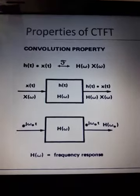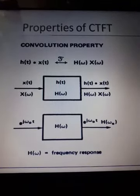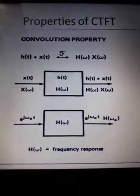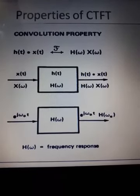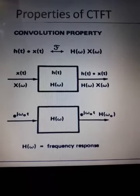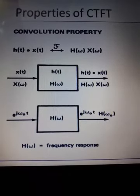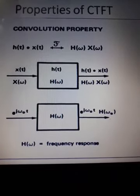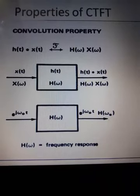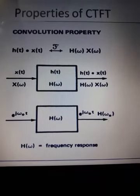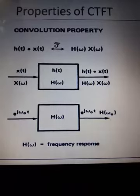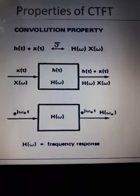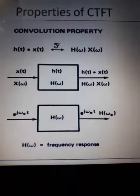The third property is the Convolution property. It states that the convolution of two functions in the time domain is equivalent to their multiplication in the frequency domain. For two continuous-time signals x1(t) and x2(t) with transforms X1(jω) and X2(jω), the CTFT of x1(t) convolved with x2(t) equals X1(jω) · X2(jω). Thank you.